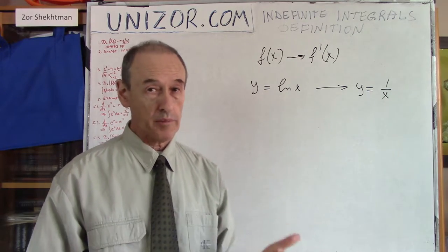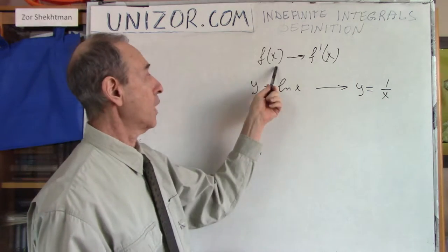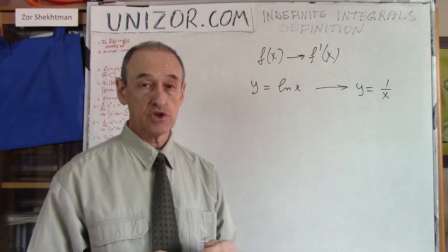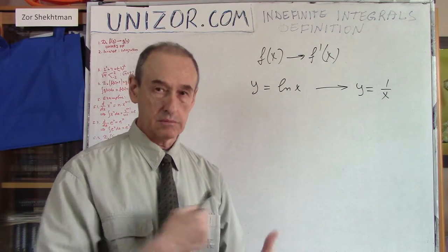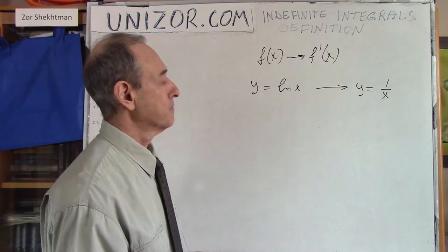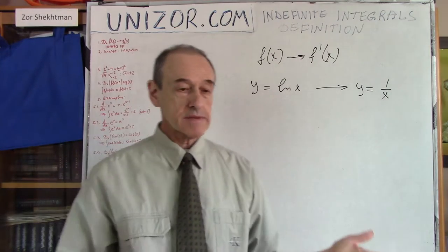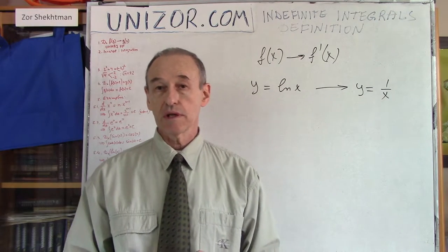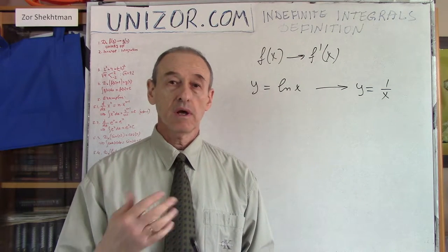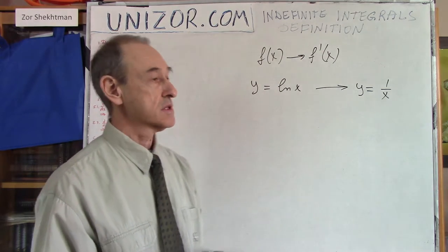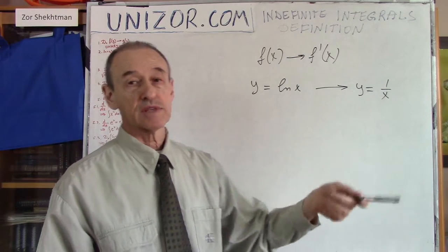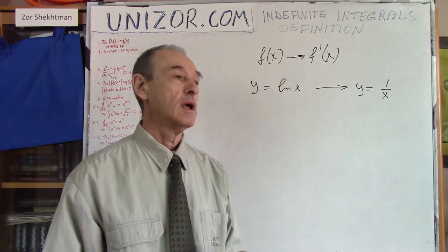It's a unary operation, by the way, because there is only one argument of differentiation — the function whose derivative we are taking. And as with any operation, we are interested in properties. We have already examined the properties of derivatives, such as: the derivative of a sum equals the sum of derivatives.